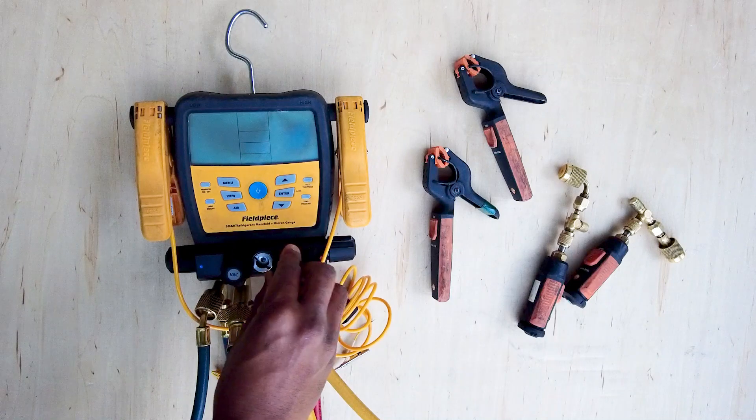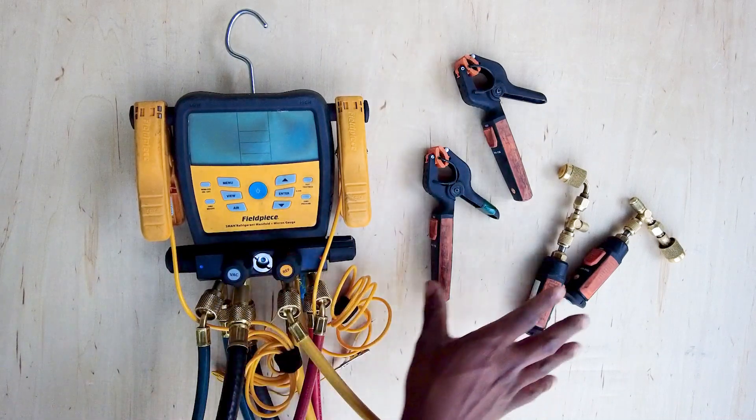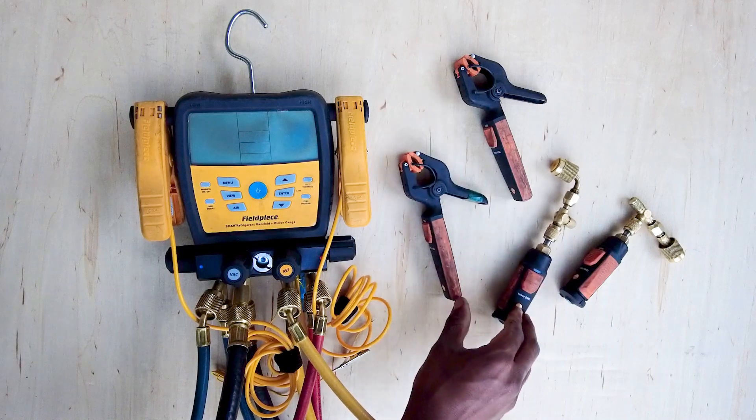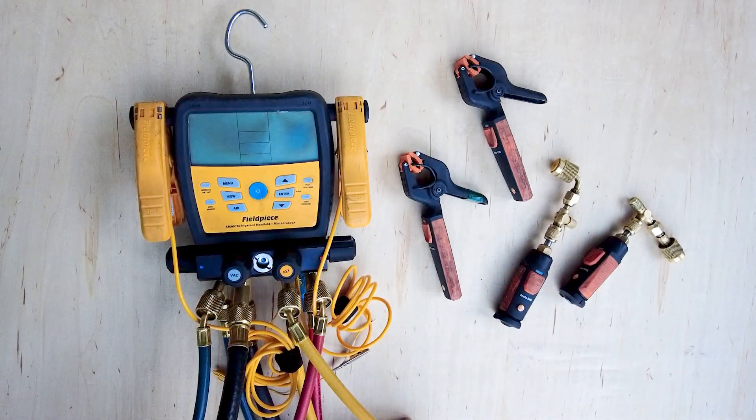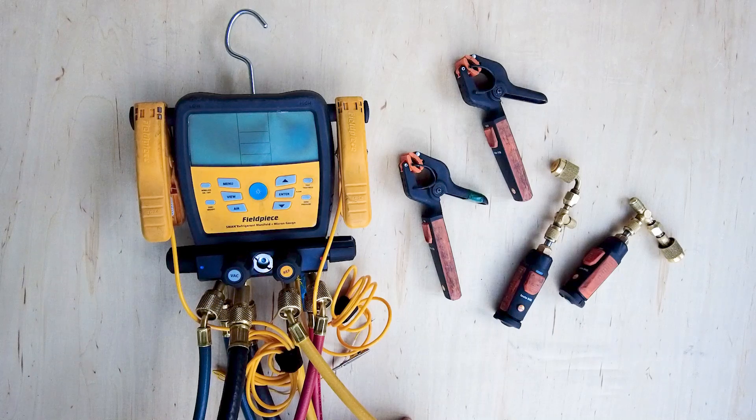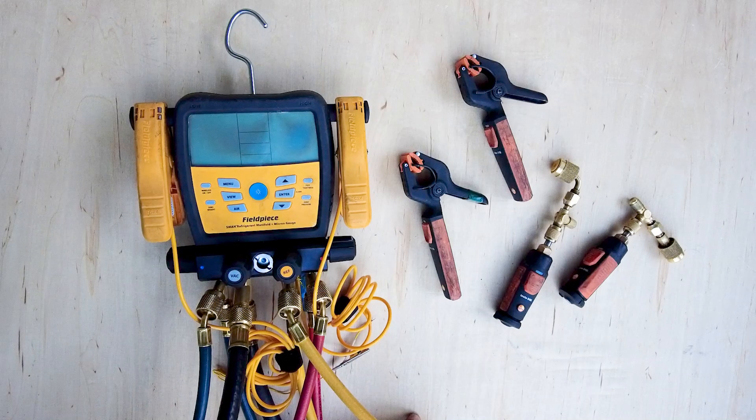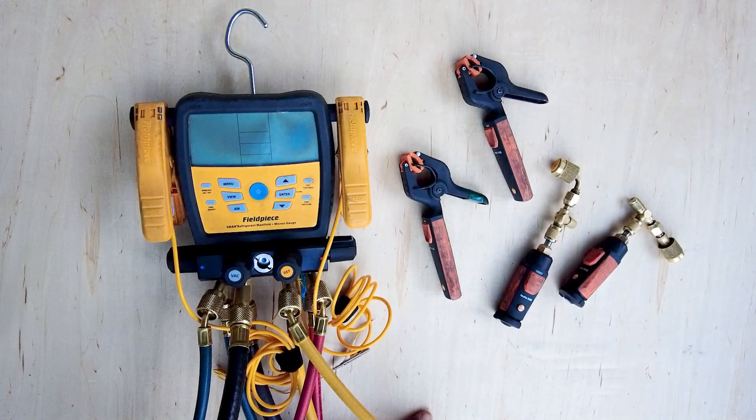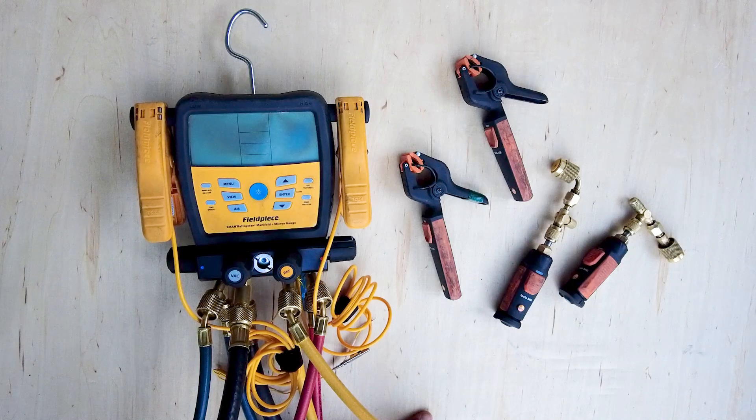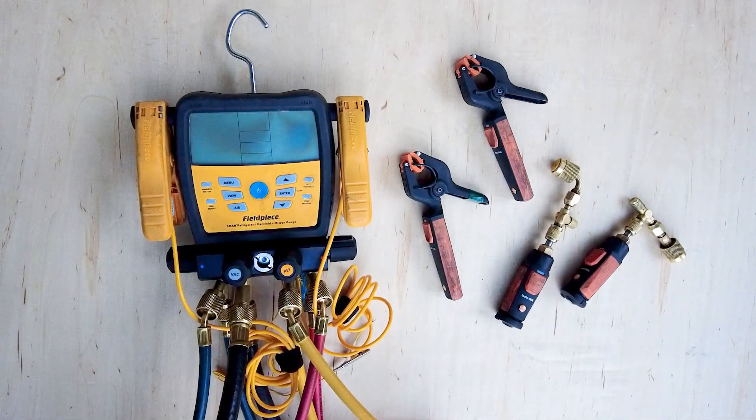I also like the valve for charging refrigerant. When I charge with these here, I just use the actual valve on the can, the refrigerant canister. And when it's upside down, it's just kind of a little bit hard to access when it's upside down on the scale. I mean, I could also just get a ball valve that goes on the end of my hoses, but that's how I've just been doing it.